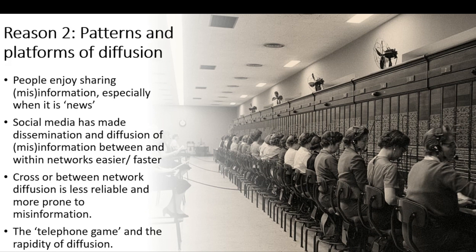The second reason folks share misinformation and disinformation relates to the patterns in which this information can diffuse through networks. There's a human nature element to all of this — we like to share things that are news, we like to be seen as ahead of the curve. If something is new, or you feel like the person you're sharing it with hasn't seen it before, you're much more likely to share it. This leads to more rapid spread, especially in emergency situations. We're much more willing to be wrong if we're first, and this sense of newness helps us pass misinformation on.